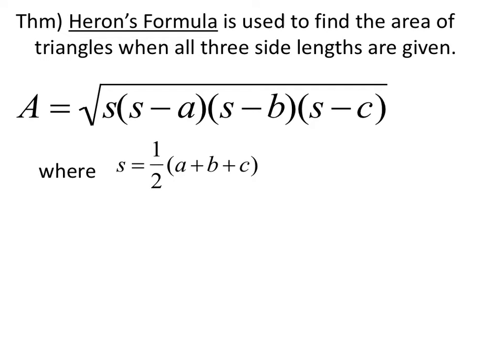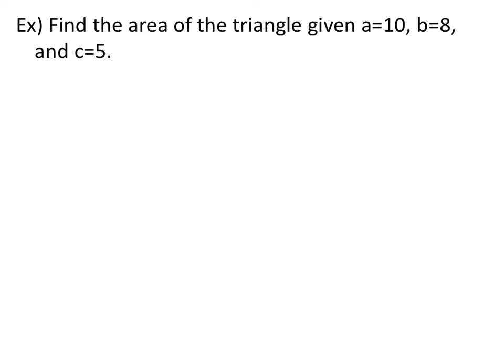Heron's formula is the square root of s times (s minus side a) times (s minus side b) times (s minus side c). a, b, and c are the sides of the triangle. s is one-half times the sum of the three sides. Here we're given a side-side-side triangle. Use Heron's formula to find the area of this triangle.